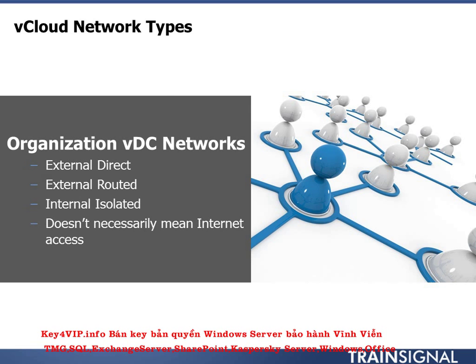Now we're getting into the fun plumbing — this is where we get into the realm of organization VDC networks, or org VDC networks. These are limited to three different types: external direct, external routed, and internal isolated. The use of the word 'external' can cause confusion since we already talked about an external network, but anything with the word 'external' for an org VDC network means it's talking to the external network. I'll show some examples and go over these three different types.